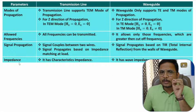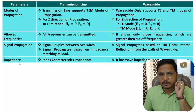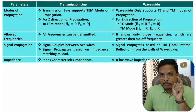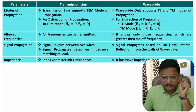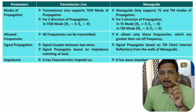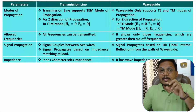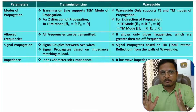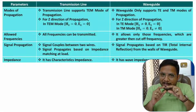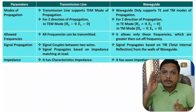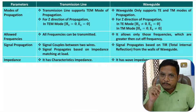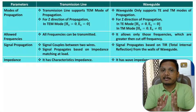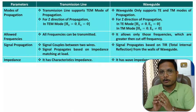The next parameter is impedance. With a transmission line, we talk about characteristic impedance Z₀, which is the impedance of the transmission line given that its length is infinite. Based on characteristic impedance, the load value should be close to the characteristic impedance for maximum power transfer to the load.